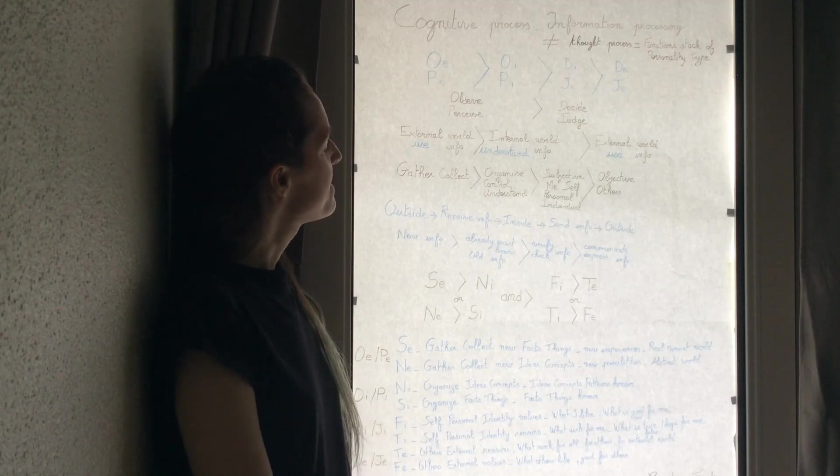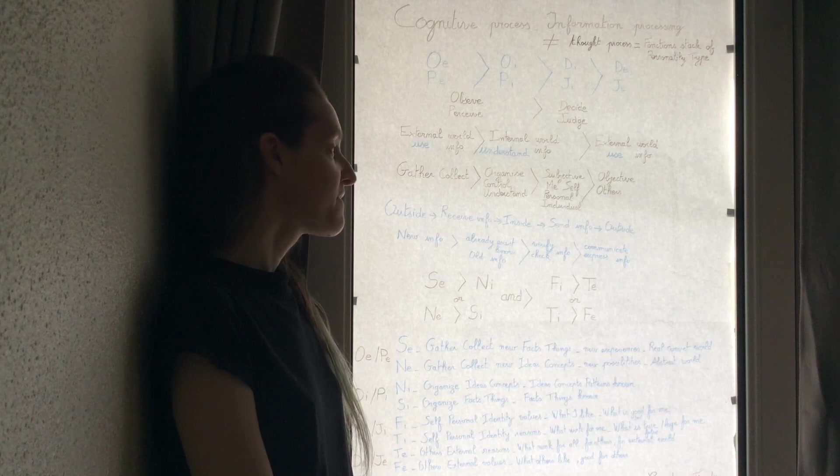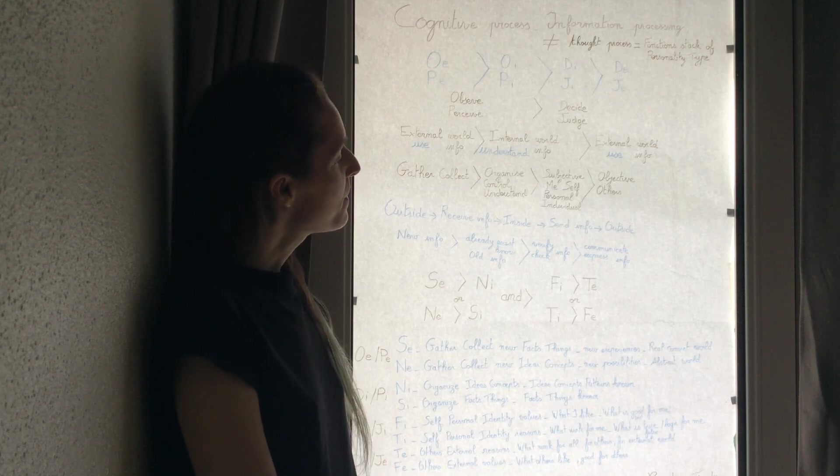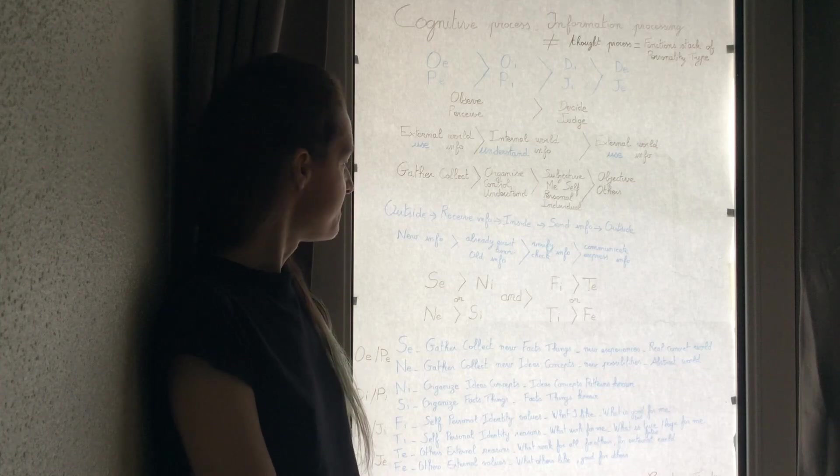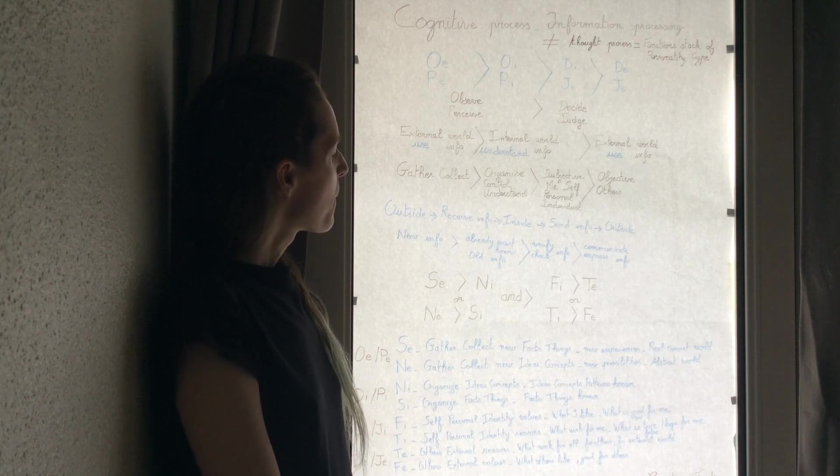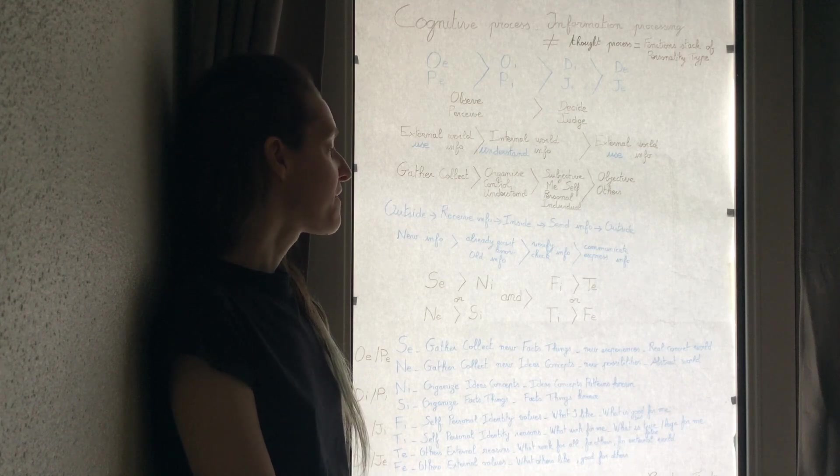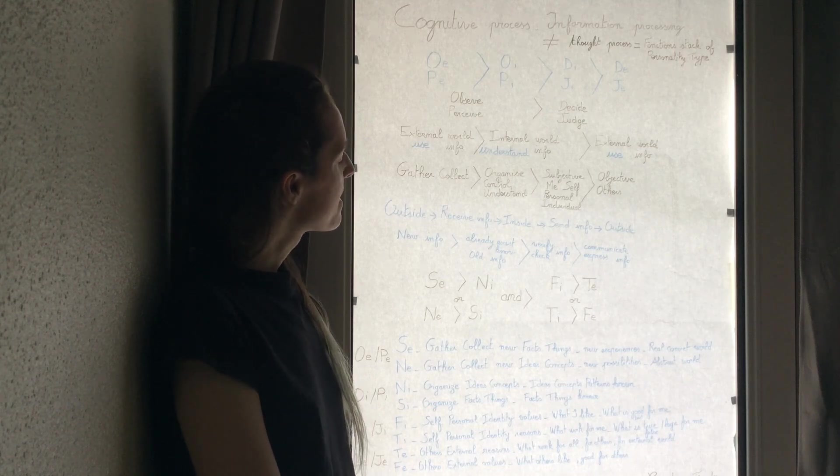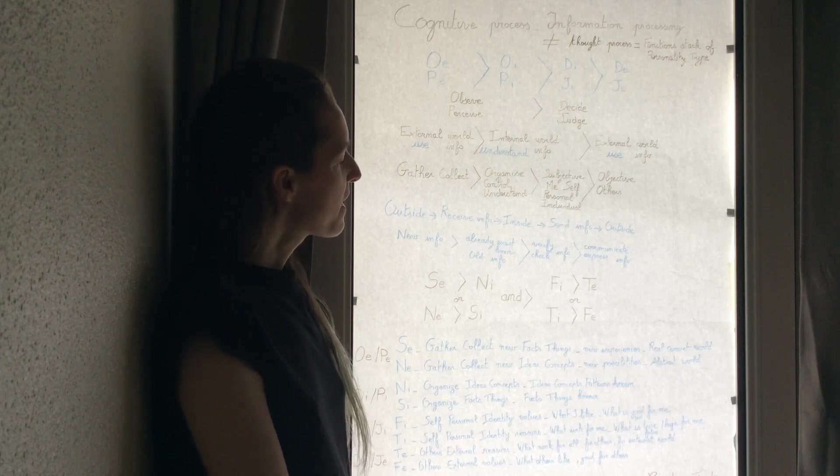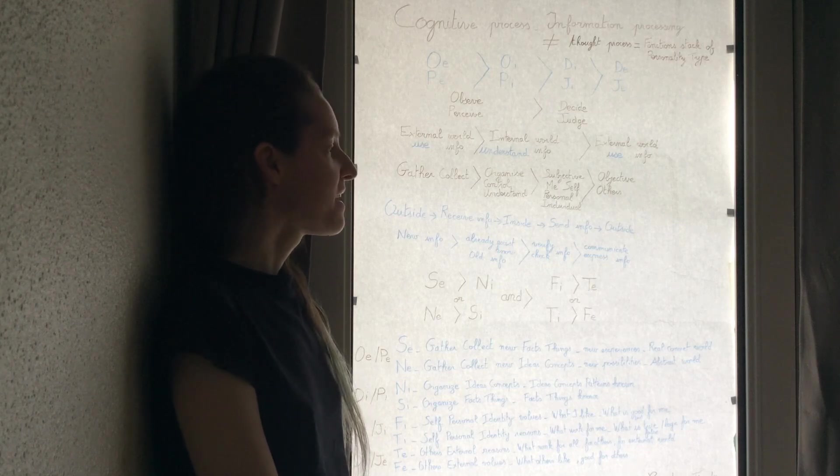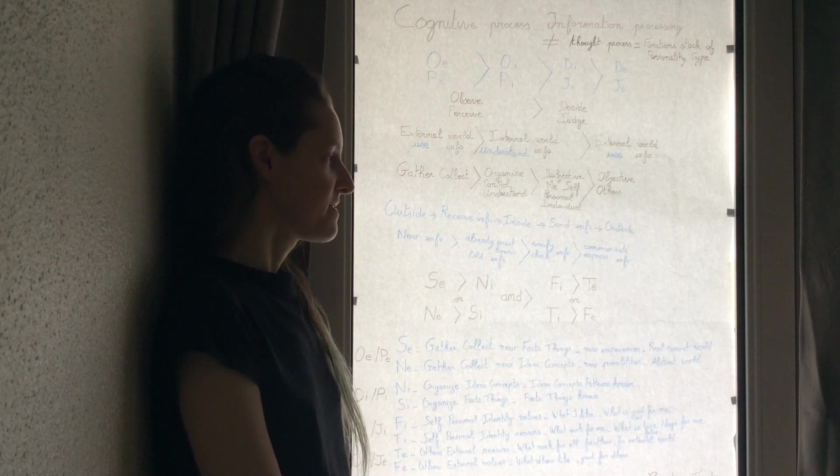The information is outside, we receive the information, and after this information is inside, we send the information, and the information is outside. We have new information, we add it and compare it to the information we already have, that already exists, that we know, the old information. And we verify, check the information for us, and we communicate and express the information.